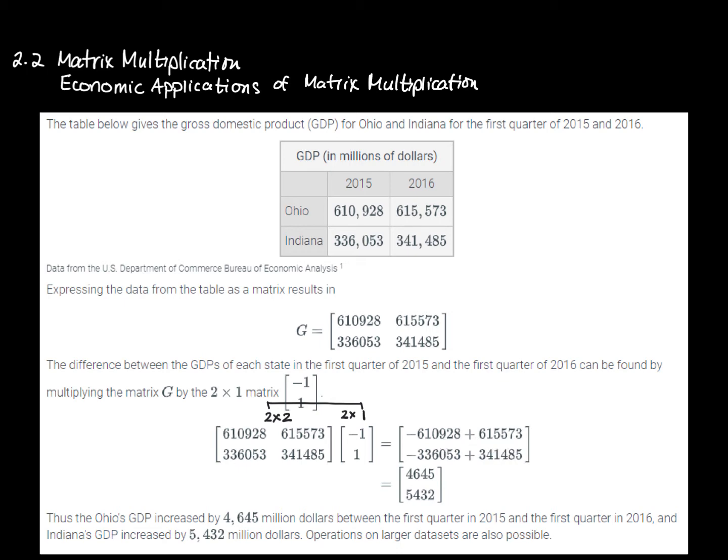If we do the same thing with the second row, we get negative 336,000 plus 341,000. When we add those together, we get this two by one matrix, and what that essentially does is subtract